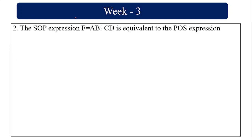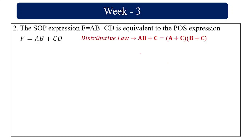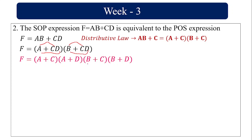Next, converting the SOP expression F = AB + CD to POS (product of sums) using the distributive law: AB + C = (A + C)(B + C). Applying this: AB + CD = (A + CD)(B + CD), then expanding further using distributive law gives (A + C)(A + D)(B + C)(B + D). So the POS form is (A + C)(A + D)(B + C)(B + D).